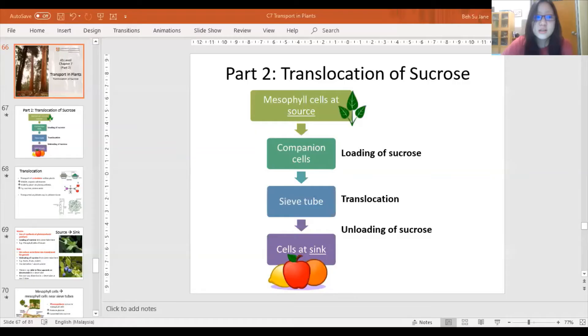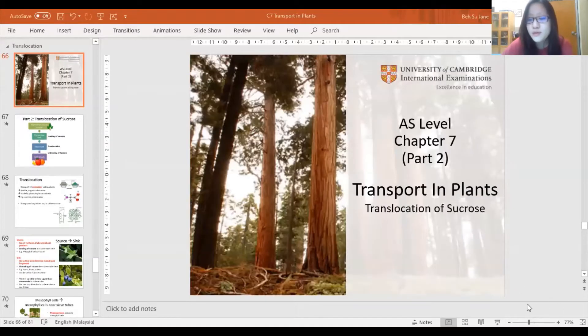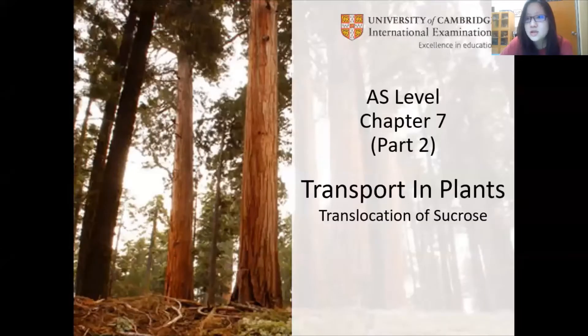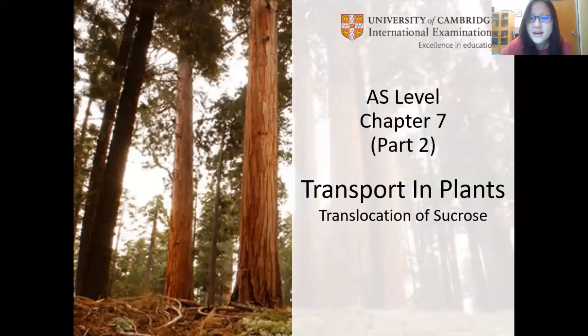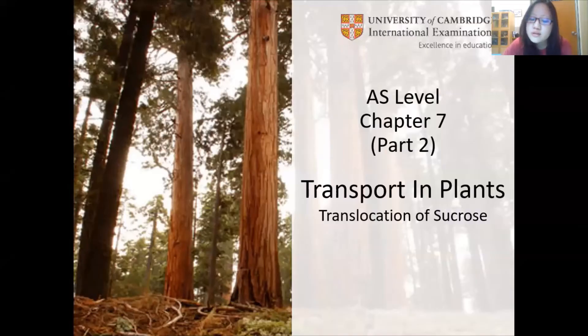Let's cut straight to the chase. In transport in plants, there are a few things that need to be transported. So far, we have covered gases — gases are transported via simple diffusion. There is water and ions which are transported via what we'll see in Part 1b and Part 1c. Mainly, water in xylem is transported against gravity by transpiration pull and by adhesion and cohesion of water.